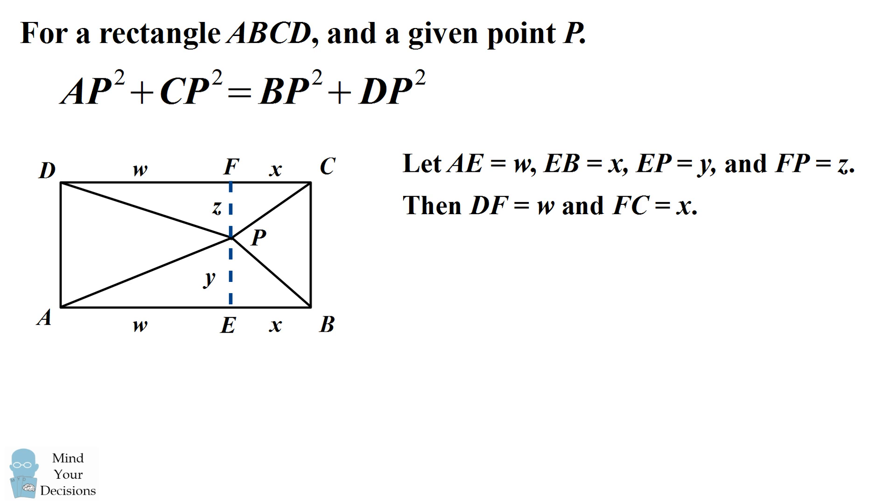So now where does this get us? Well, you can see that we have four right triangles that involve the four distances to P that we want. So we can figure out the squared distances using the Pythagorean theorem.